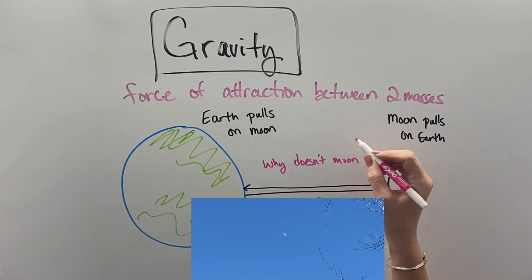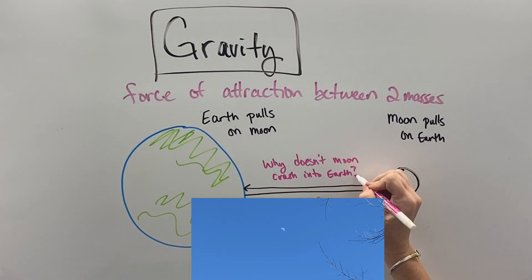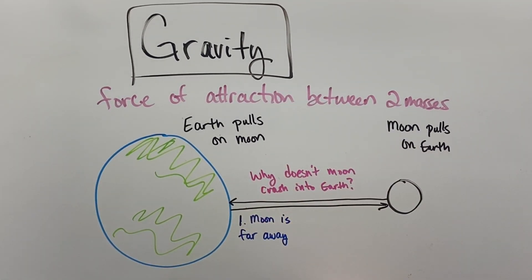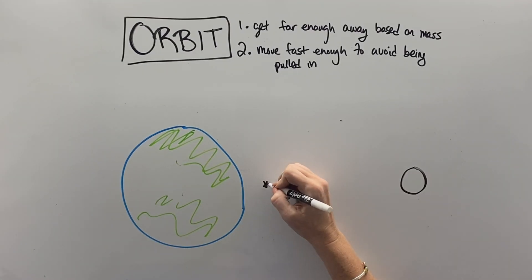So, why doesn't the Moon come crashing down into the Earth if the Earth is bigger? Well, first of all, the Moon is too far away. So, it has that increased distance, which decreases the gravitational pull. And secondly, the Moon is moving way too fast for the Earth to actually grab onto it and pull it in.